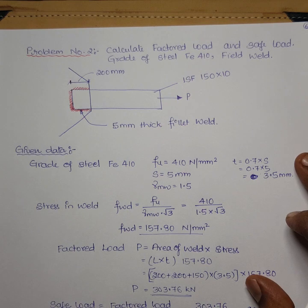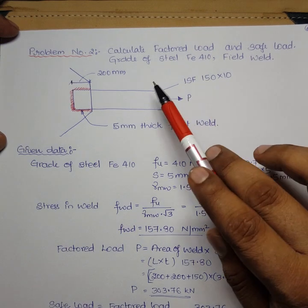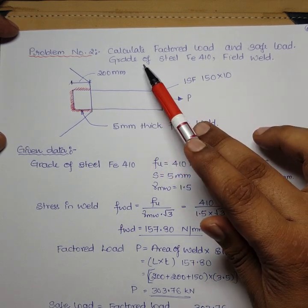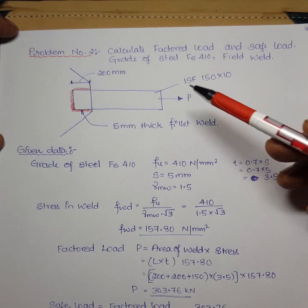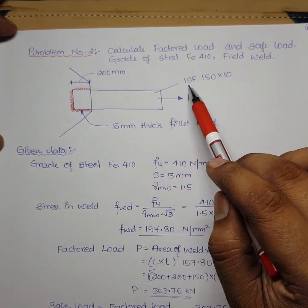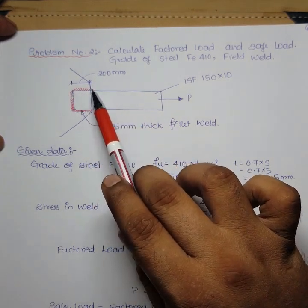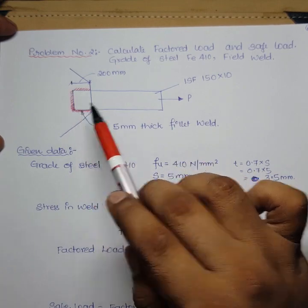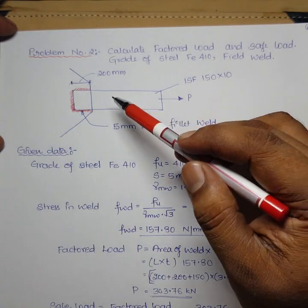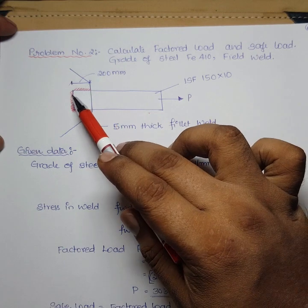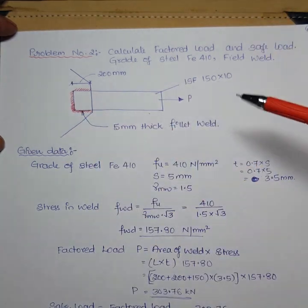Problem 2: Calculate the factored load and safe load for the figure shown. Grade of steel is fe 410 and it is a field weld. The section is ISF 150×10, meaning depth = 150 mm. The weld extends 200 mm + 200 mm + 150 mm = 550 mm total length.